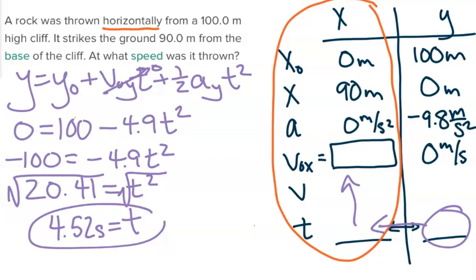So now that we have our time, we can use the exact same equation to find our initial velocity. We can use x equals x initial plus initial velocity in the x direction times time. I'm going to go ahead and not even include the last term for this equation because we know the acceleration is 0.